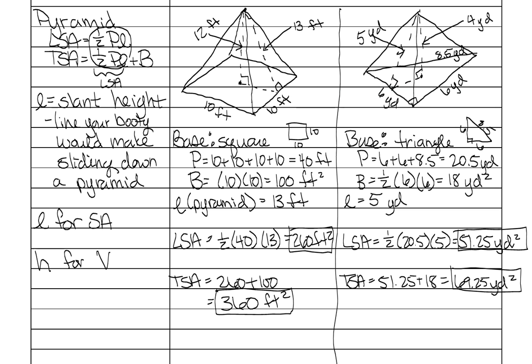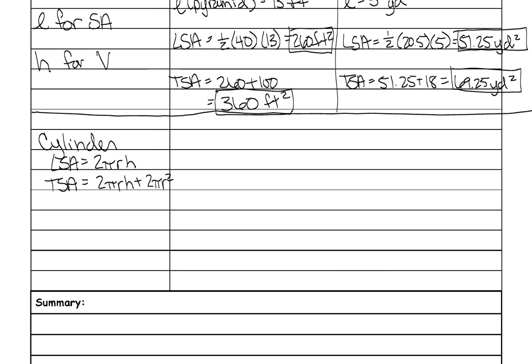Next we're going to look at cylinders and cones. All these formulas come from the geometry formula chart. For a cylinder, 2πr is the circumference, which is the perimeter of the circular base. So the lateral surface area is the same as perimeter times height — the exact same formula as a prism. The total surface area adds two times the area of the base (πr²), just like a prism. The formulas are the same; they just give you the circle-specific parts.